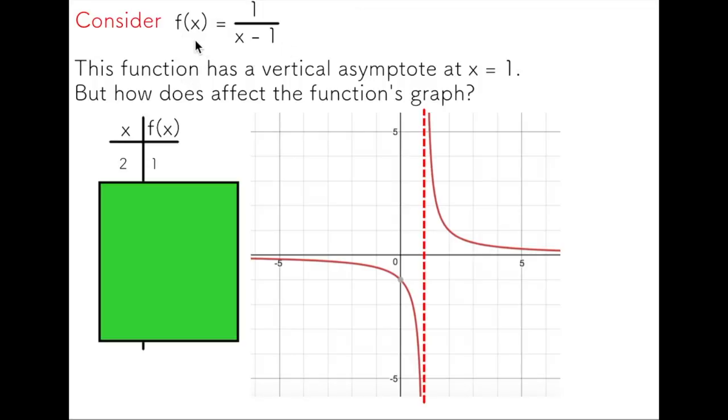Let's consider the function f(x) equals one over x minus one. This function has a vertical asymptote at x equals one. The reason for this is if I put one in for x, I get zero in the denominator of my function, and we just discussed that we're not able to divide by zero. So this function is restricted when x is equal to one. Let's look at how this would affect the function's graph.